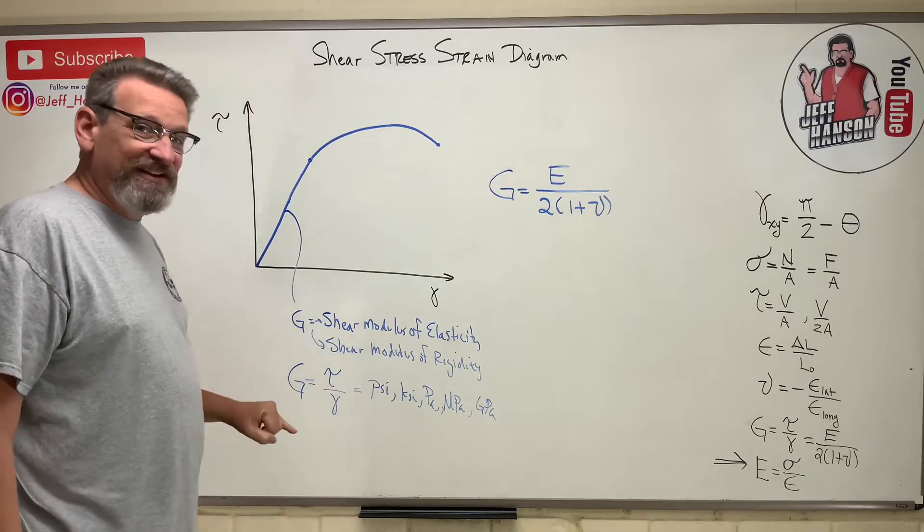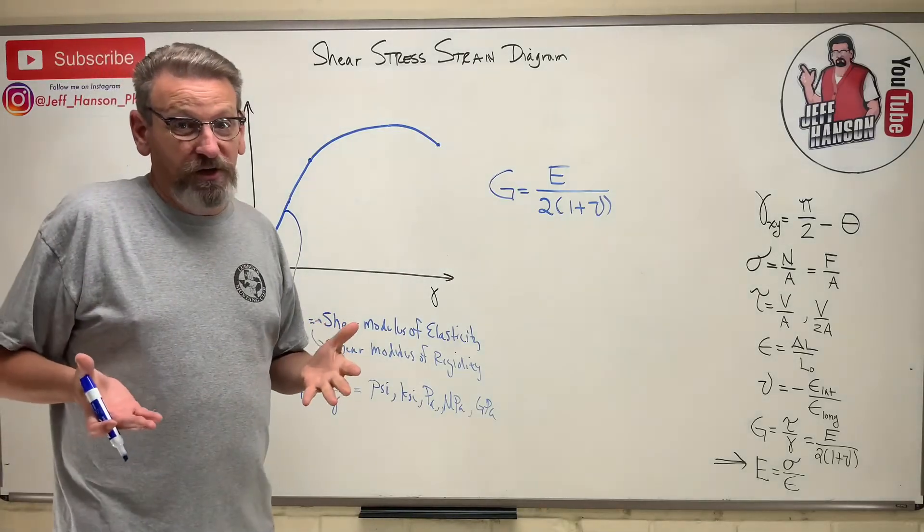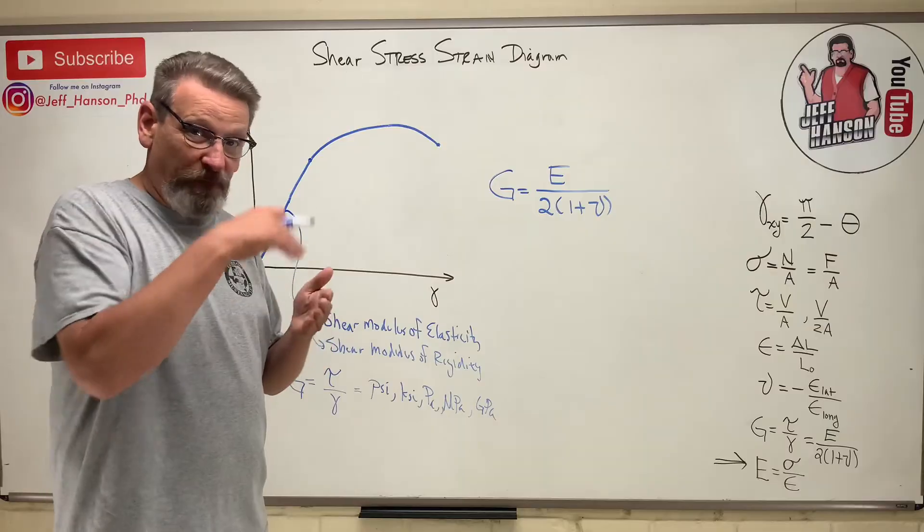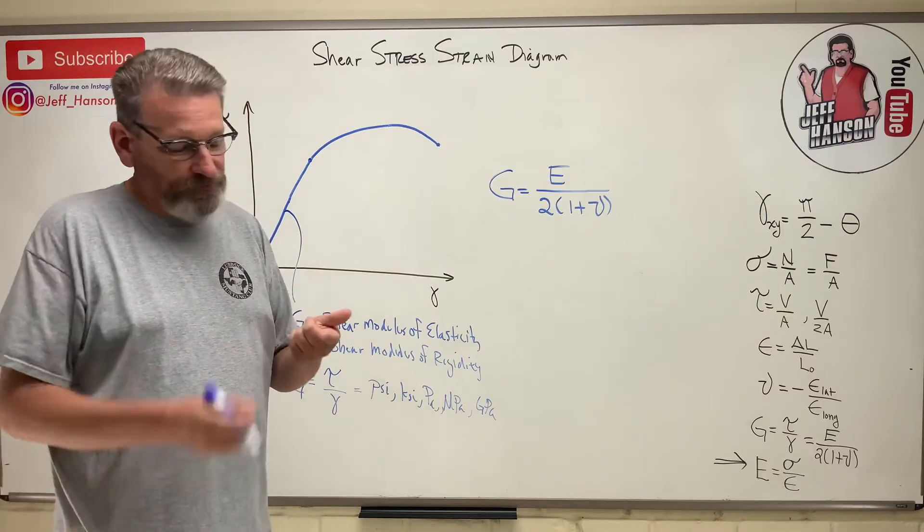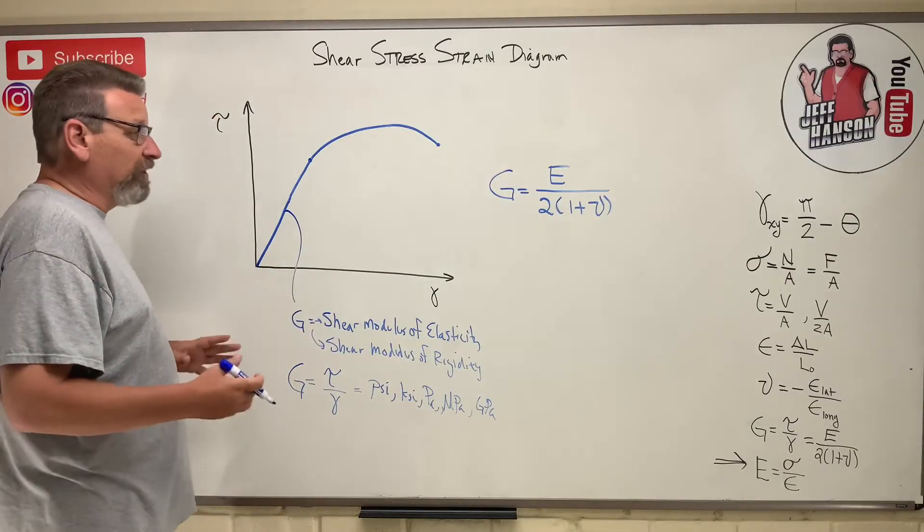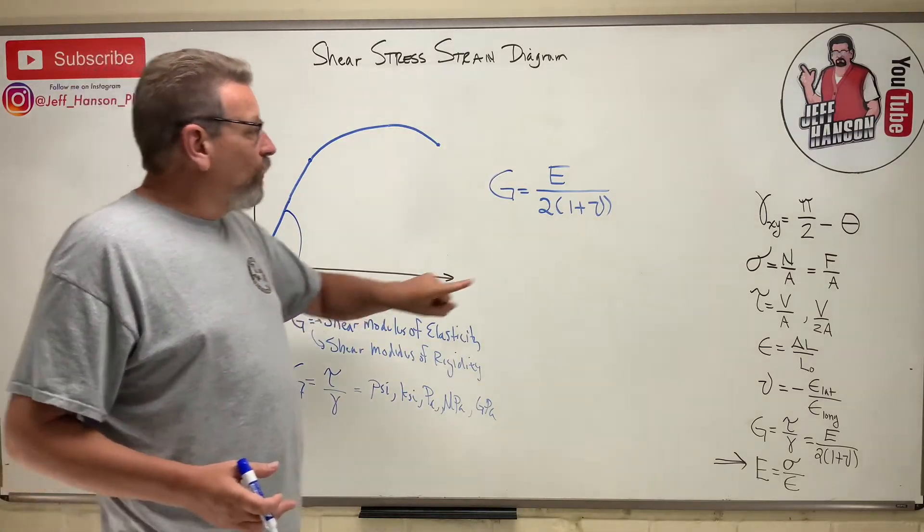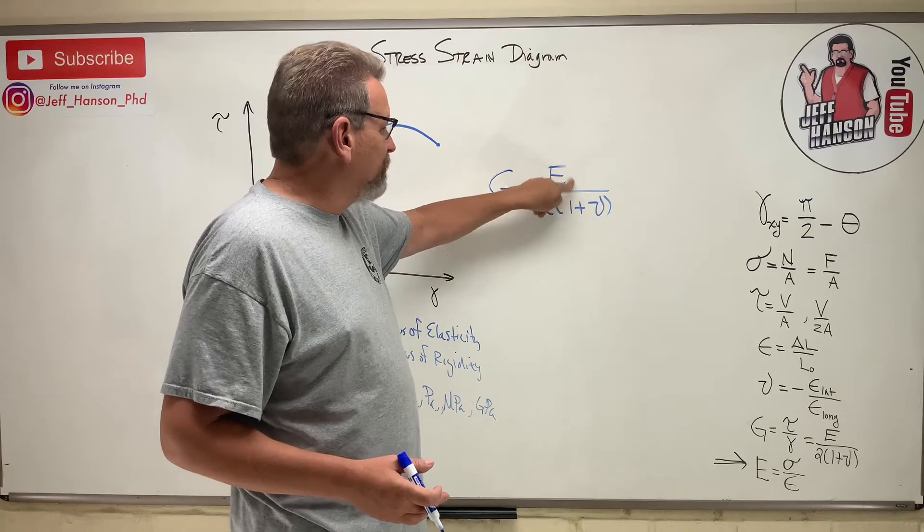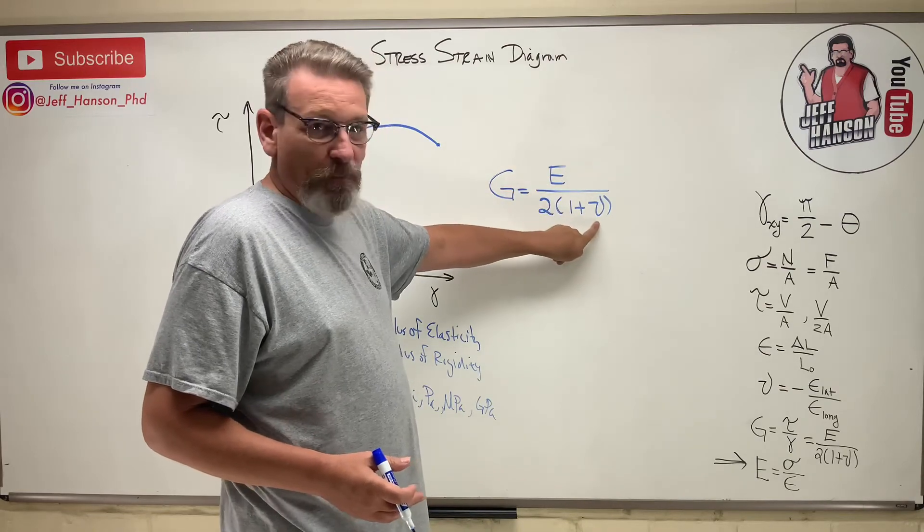Now G, the shear modulus of elasticity, is the value that you can look up in the back of the book. So you go to your material properties, and you can read off what G is for 836 steel, what is it for aluminum, and so on and so forth. So you can look that value up, or we can calculate it if we know the modulus of elasticity and we know Poisson's ratio.